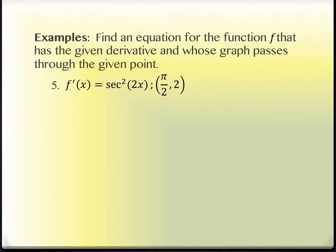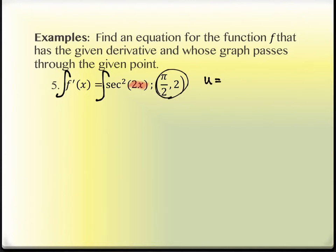This example asks us to find an equation for a function that has a given derivative and whose graph passes through a given point. We find the antiderivative of secant squared of 2x. Even though it doesn't obviously look like a product, there's a 2x on the inside, so we use u equals 2x. The derivative of 2x is 2, so du equals 2 dx, which means dx equals one-half du.